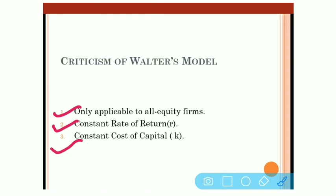The third criticism is the assumption of a constant cost of capital, K. The firm's cost of capital does not always remain constant — this is again an unrealistic assumption. In fact, K changes directly with the firm's risk. As a firm takes on higher risk, the expected return also increases, meaning shareholders expect more. So K is generally not constant and changes with the firm's risk profile.